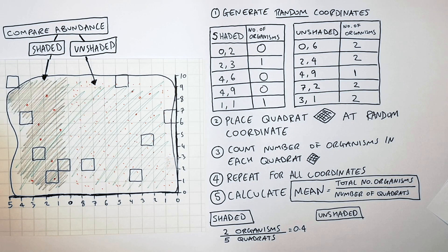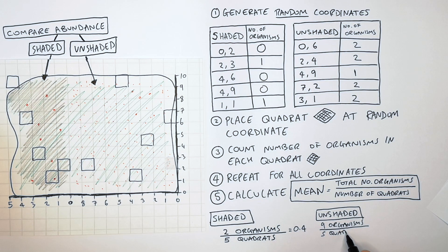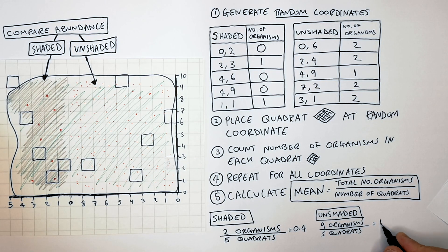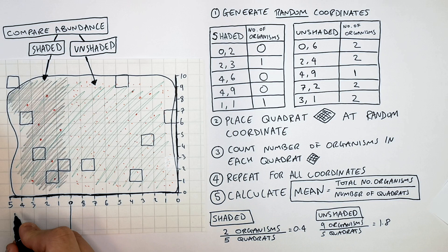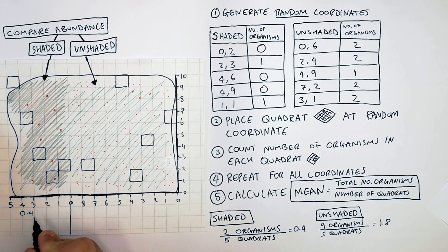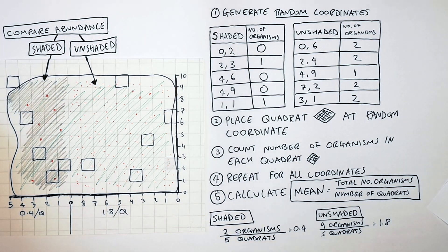In the unshaded region we counted a total of 9 organisms, and there were 5 quadrats. So 9 plants divided by 5 quadrats gives you an answer of 1.8 plants per quadrat. The shaded region has a mean of 0.4 plants per quadrat compared to the unshaded region which has a mean of 1.8 plants per quadrat.